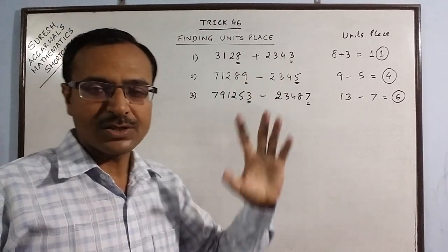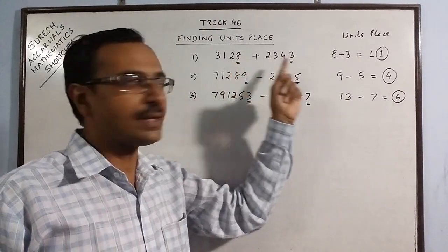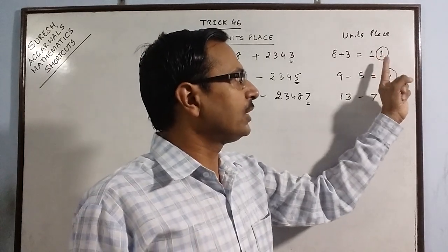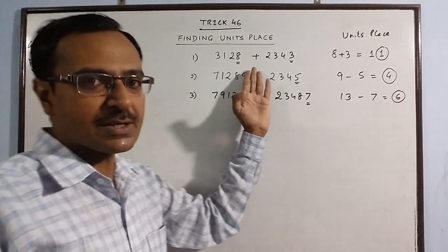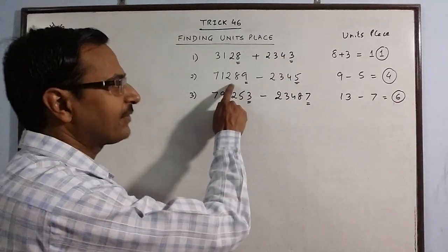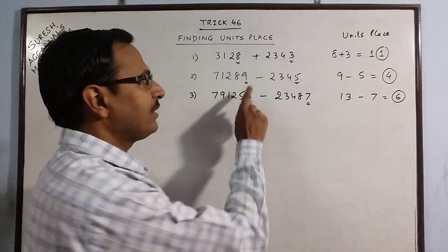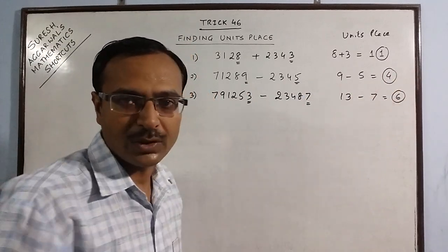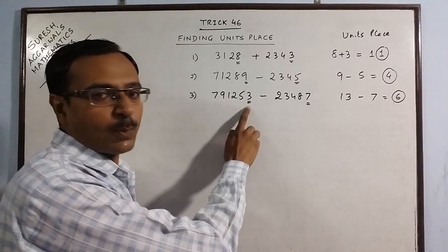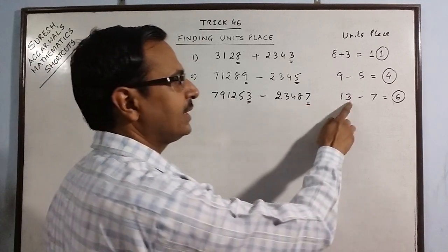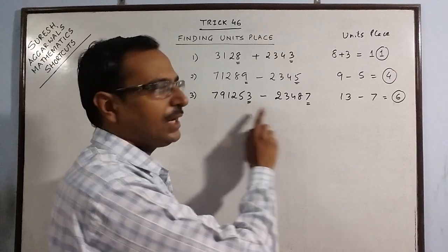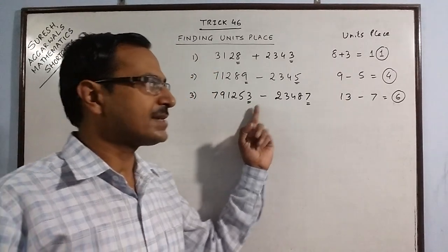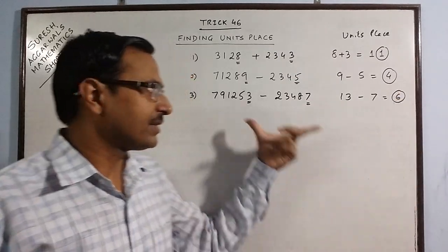In addition, there is no problem even if the unit's place of one number is smaller than the other — you just add the two and if you get a two-digit number, the unit's place of that sum gives you the answer. But in case of difference, if the first unit's digit is greater than the second, just subtract to get the unit's place. But if it is smaller, you convert it by prefixing 1, then subtract to get the unit's place of the difference.